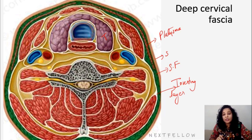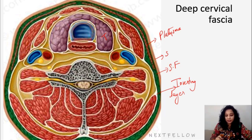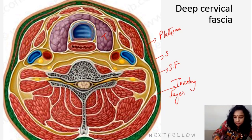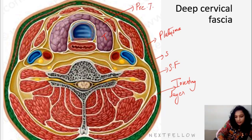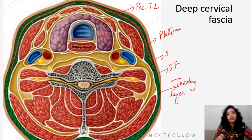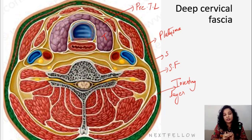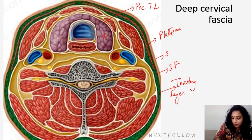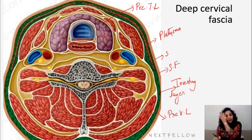The other forms of deep cervical fascia in the neck are the pre-tracheal and pre-vertebral layer. This is the pre-tracheal layer — it is in front of the trachea, enclosing the thyroid gland. And the third is the pre-vertebral layer, which is in front of the vertebral column, encircling the vertebra and also the muscles associated with the vertebra.